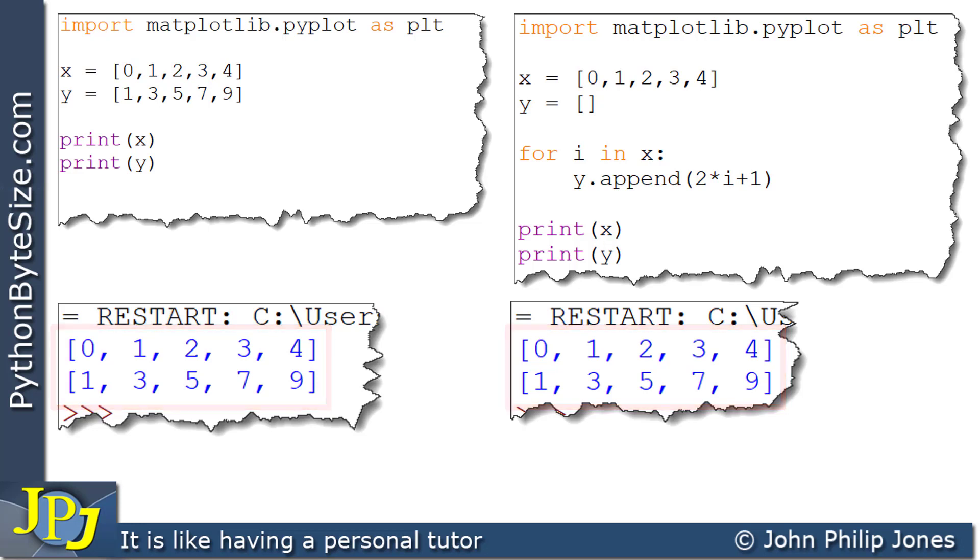The difference is, here, I typed in what I knew the values of y were going to be, whereas here, I have to create an empty list for y. And then I calculated what each entry in the list would be using this for loop and using this formula here, which is effectively 2 times i plus 1, which is really 2 times x plus 1. I've just chosen i to be the name for the item within the list x.